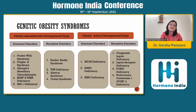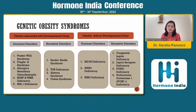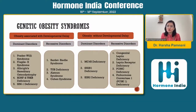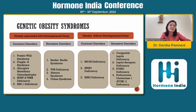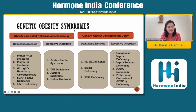It is wise to divide monogenic obesity into two forms: obesity associated with developmental delay, and obesity without developmental delay. In the developmental delay category, dominant causes include Prader-Willi syndrome, Fragile X syndrome, Albright hereditary osteodystrophy, BDNF and TRK-β deficiency, and SIM1 deficiency. Recessive causes include Bardet-Biedl syndrome, TUB deficiency, Alström syndrome, and Cohen syndrome. In the non-developmental delay category, dominant causes are MC4R deficiency, SH2B1 deficiency, and KSR2 deficiency, while recessive causes include congenital leptin deficiency, leptin receptor deficiency, and POMC/PCSK1 deficiency.